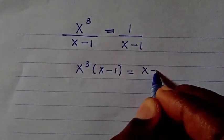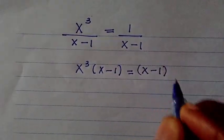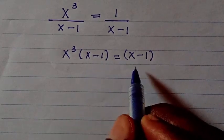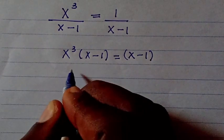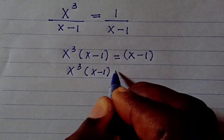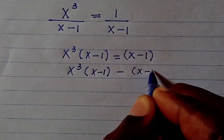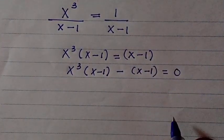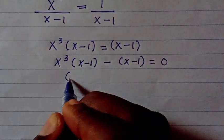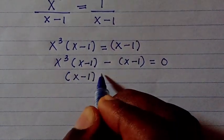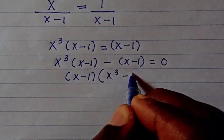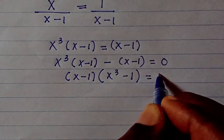We have x minus 1, and we multiply to get x minus 1. The next step is we cannot just cancel this. By taking this one to the left hand side, we have x bracket (x minus 1) minus bracket (x minus 1) equals 0. So we take out (x minus 1), and here we are left with x to the power 3 minus 1 equals 0.